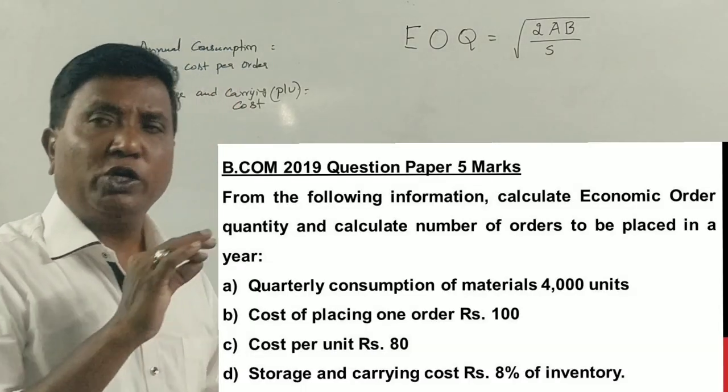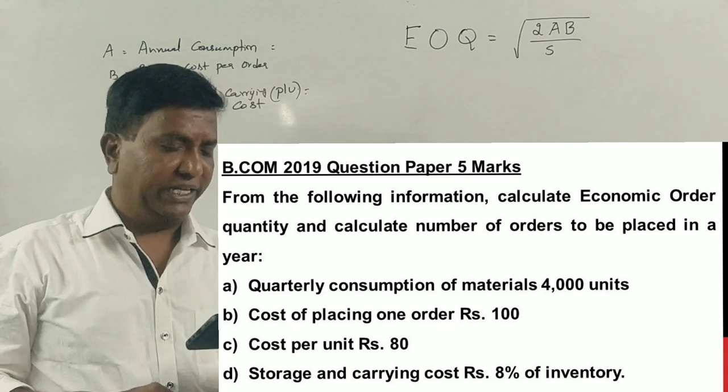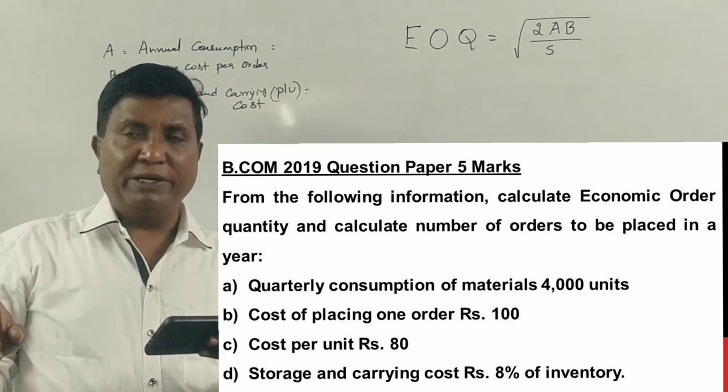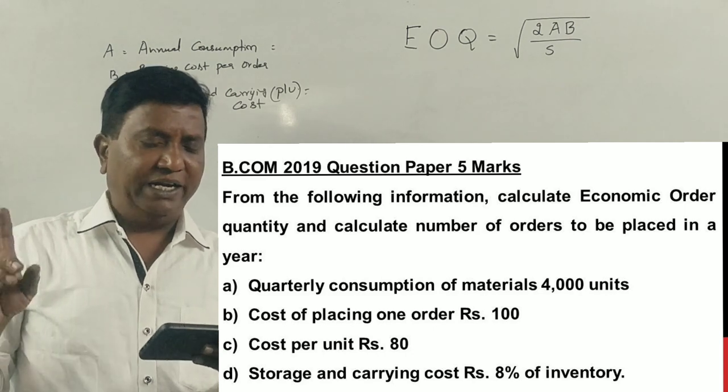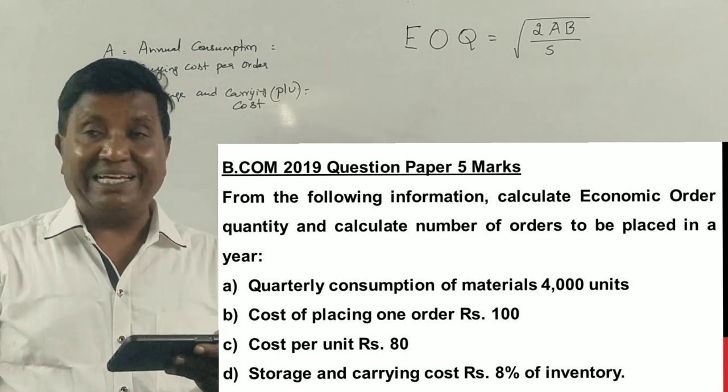Guys, 2019 question paper, this is a 5 marks question. From the following information, calculate economic order quantity and calculate number of orders to be placed in a year.